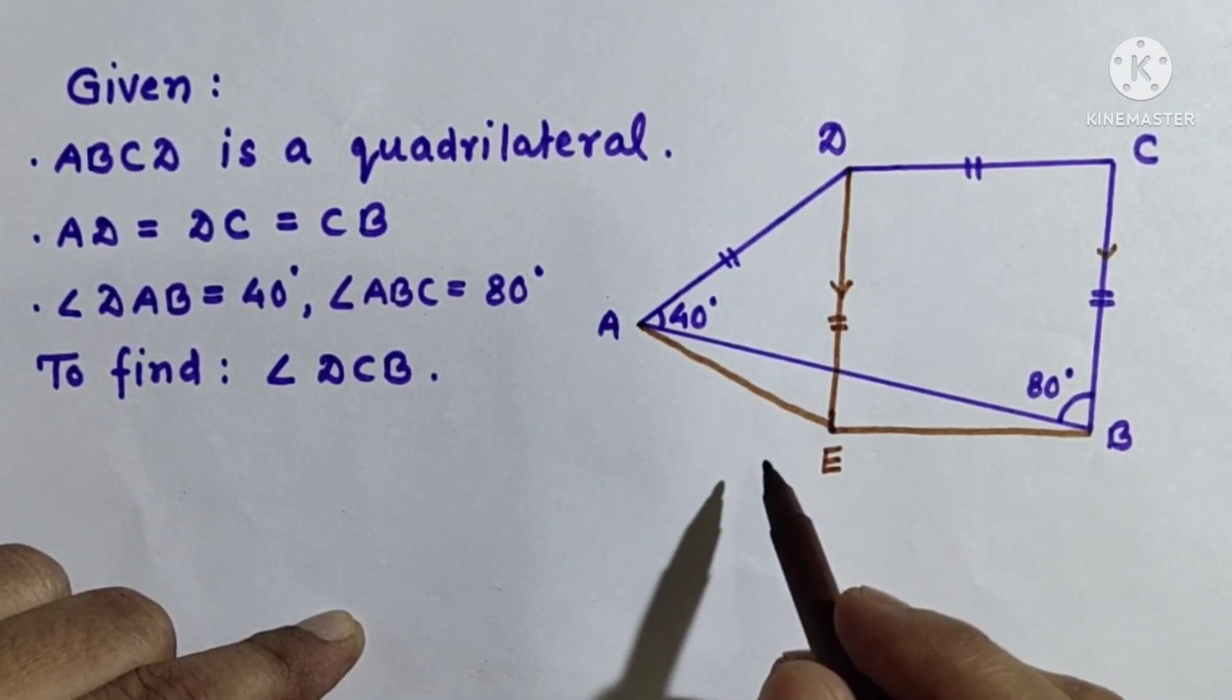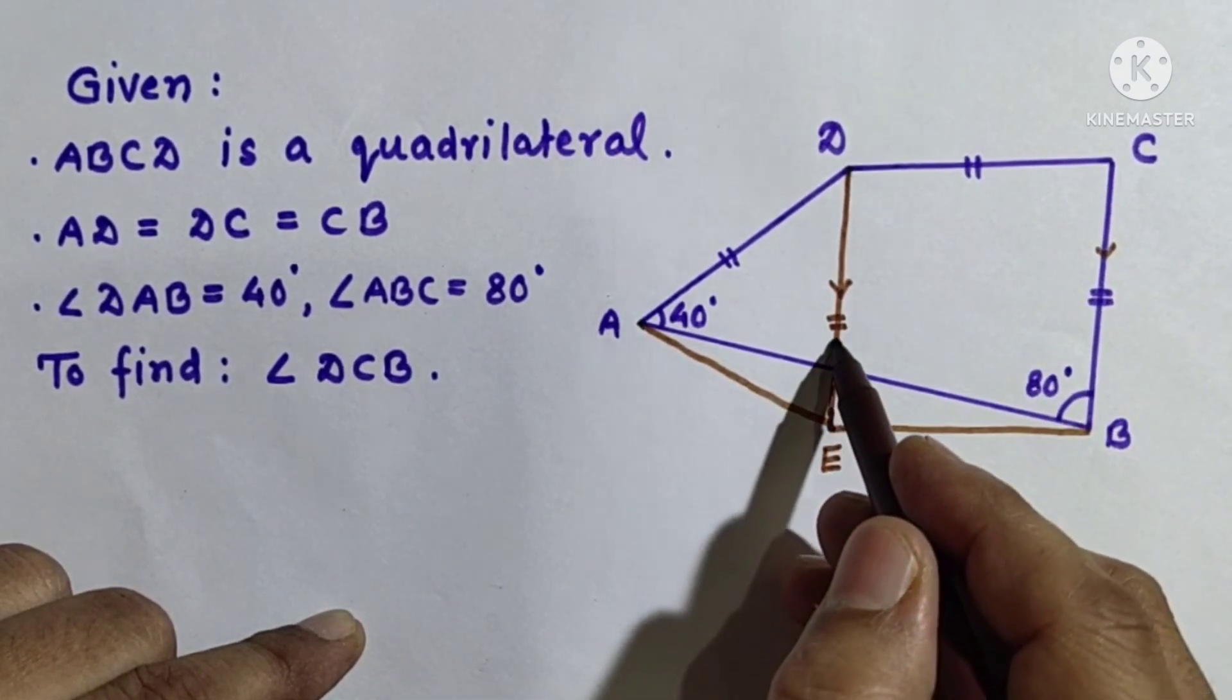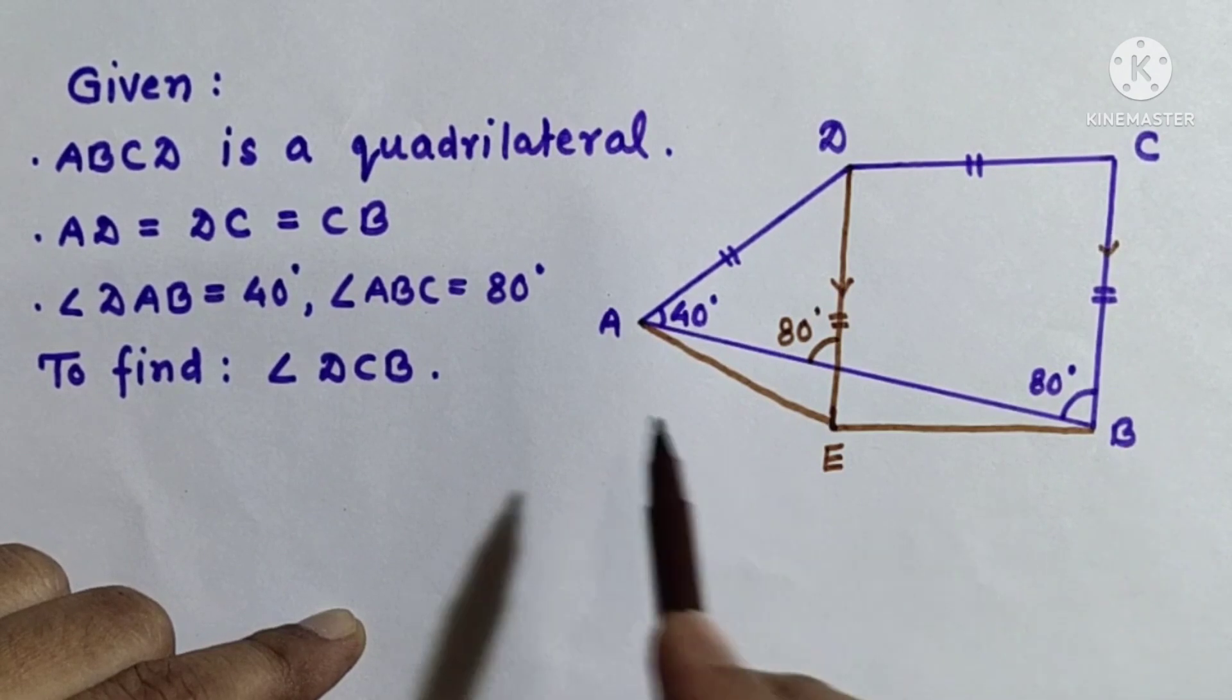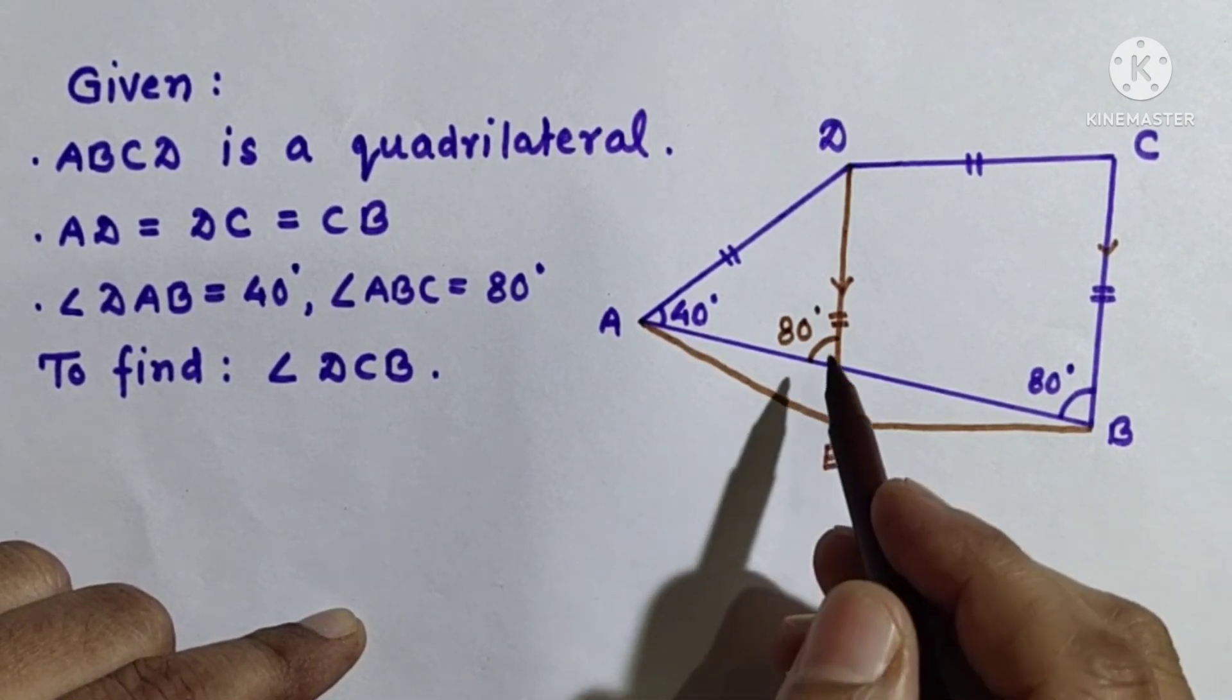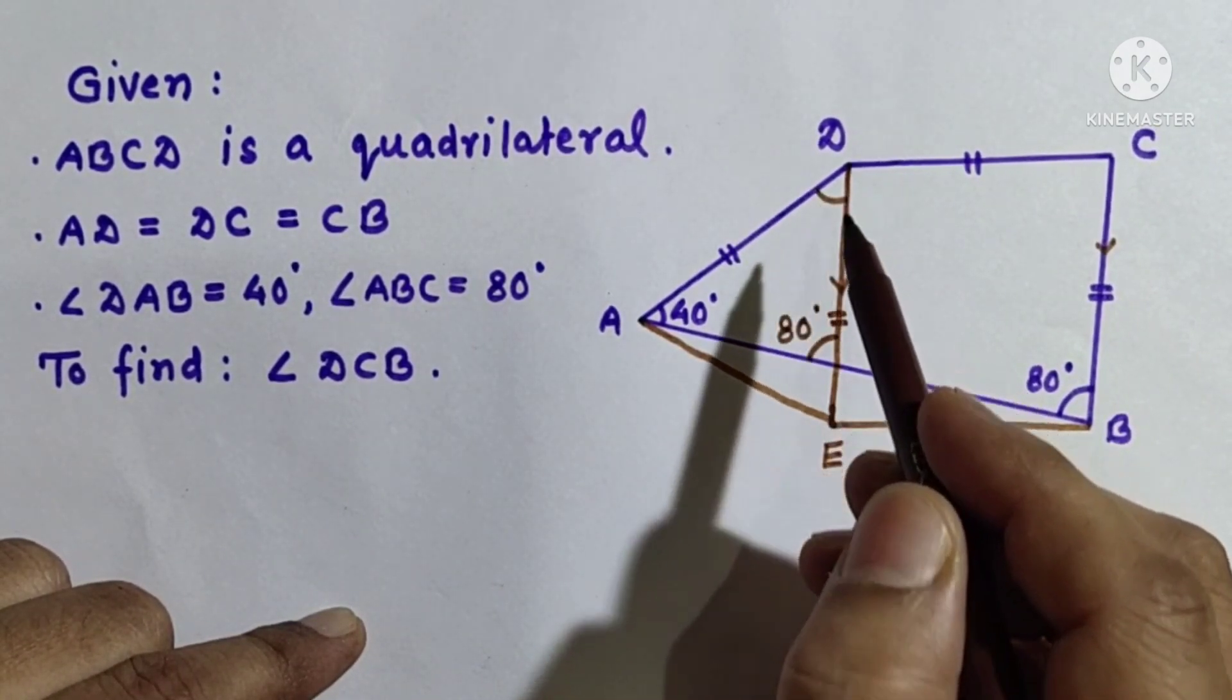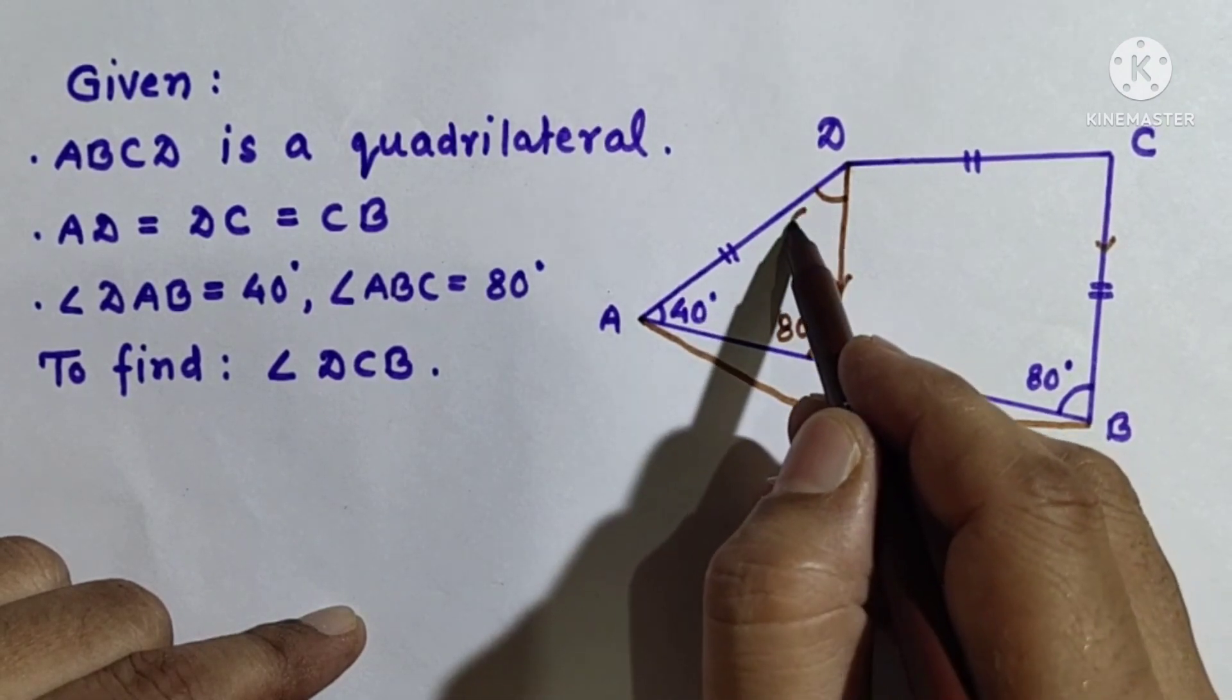Since DE is parallel to CB, this angle will also be 80 degree as the corresponding angles are equal when two lines are parallel with a transversal line. Since this is 80 and this is 40, we can find this angle D which is 180 minus sum of these two, and that is 180 minus 120 which is 60 degree.